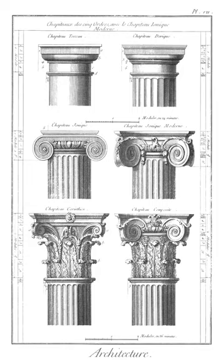Newel: the central supporting pillar of a spiral staircase. It can also refer to an upright post that supports the handrail of a stair railing and forms the lower, upper, or an intermediate terminus of a stair railing, usually at a landing.